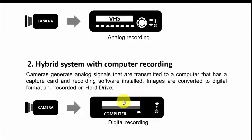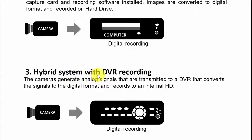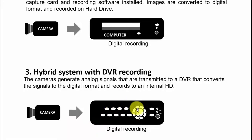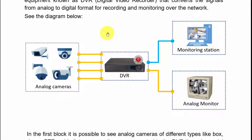The next evolution is hybrid systems with a DVR — a digital video recorder. You have analog cameras with analog cables sending the signal to a digital video recorder, which has an internal hard drive so you can record everything in digital format. It's a mixed setup — analog on the camera side and digital on the recording side — that's why it's called a hybrid system.